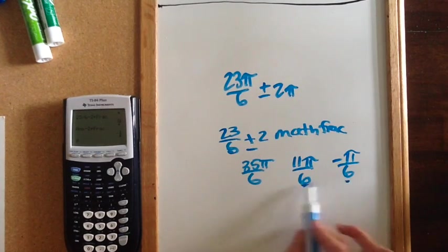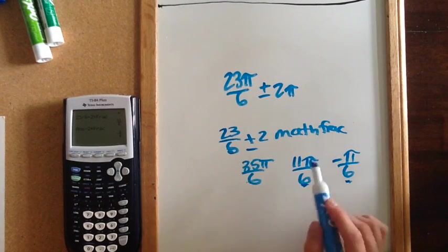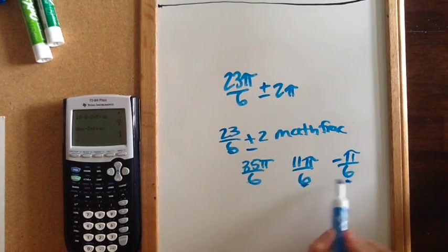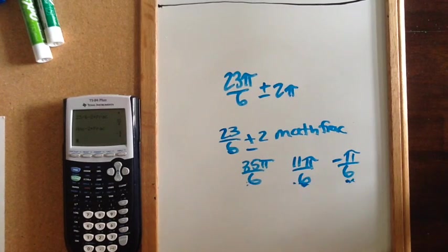So you can have either of these, or you could also have this one as your coterminal angle. You would probably encounter these two on a multiple choice test versus these two. They usually do the two closest ones, and that's how you find your coterminal angles.